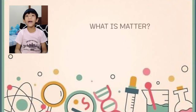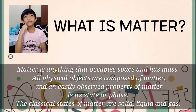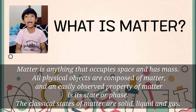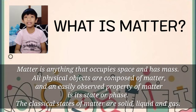What is matter? Matter is anything that occupies space and has mass. All physical objects are composed of matter, and an easily observed property of matter is its state or phase.